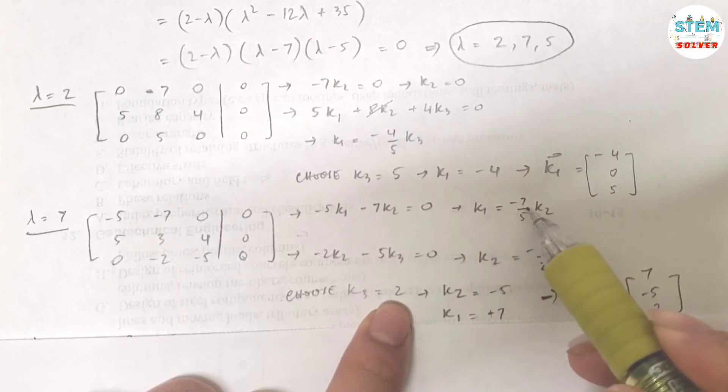k2 equals negative 5, that gives me k1 equals positive 7. Then my vector k2 is 7, negative 5, 2. Right.